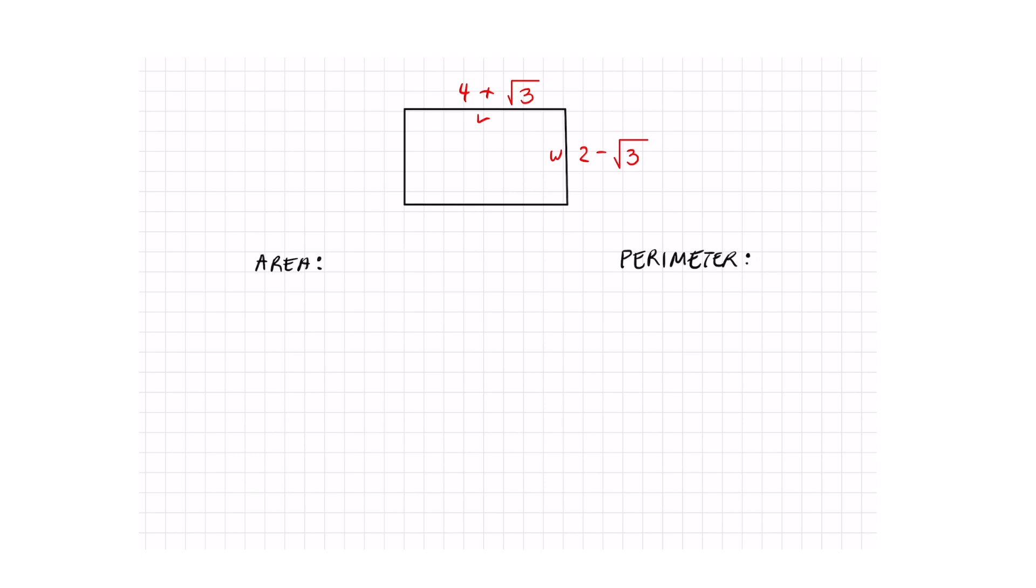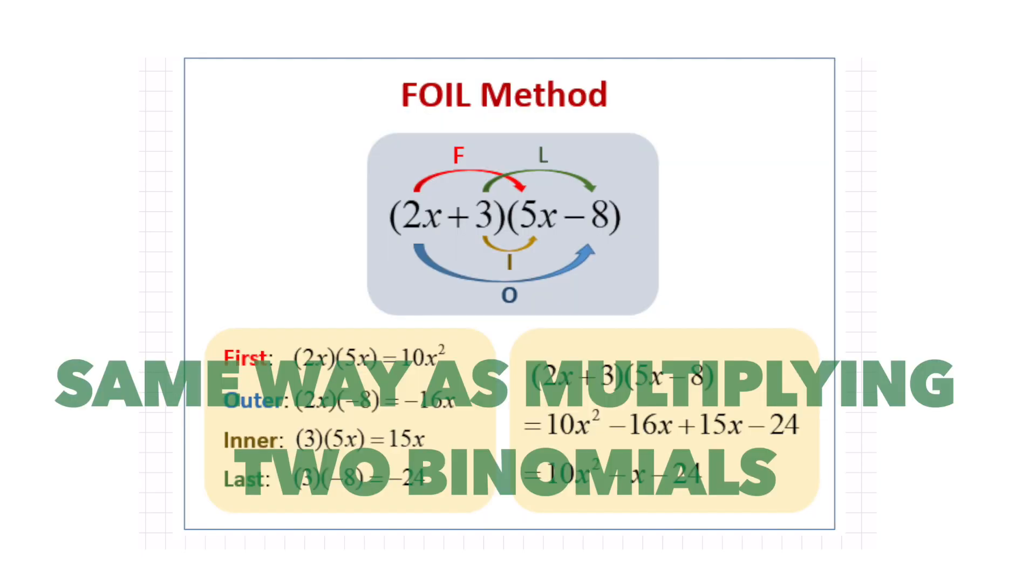To find the area of a rectangle, it is just length times width. So let's go ahead and substitute our given dimensions and I'm going to put them in parentheses. Multiplying this is very similar. Actually, it's the same exact way as multiplying two binomials.